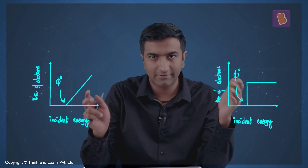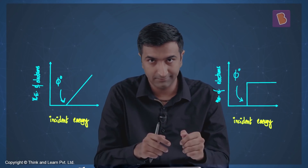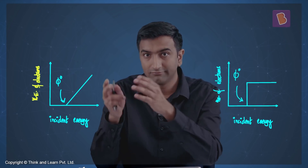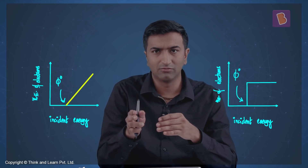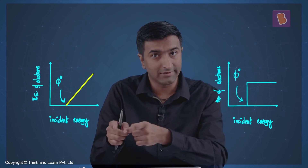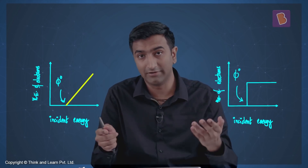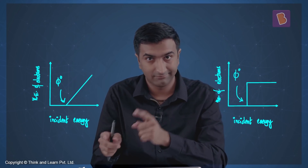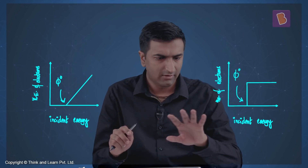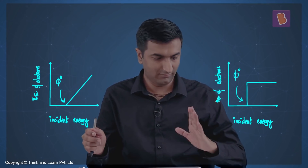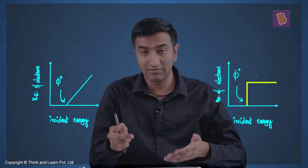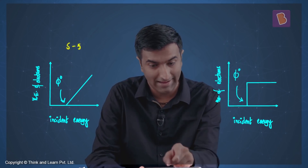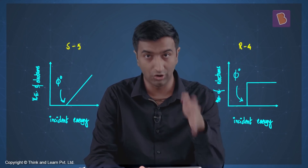Look at the graphs: incident energy is on the x-axis. Kinetic energy of electrons will be a linear relationship starting a little bit away from the origin — that's where the work function lies, since electrons are released only if energy exceeds φ₀. What about number of electrons? There are no electrons until the threshold, then suddenly electrons appear, but the number doesn't change as you increase incident energy. So S matches with 5 and R matches with 4.